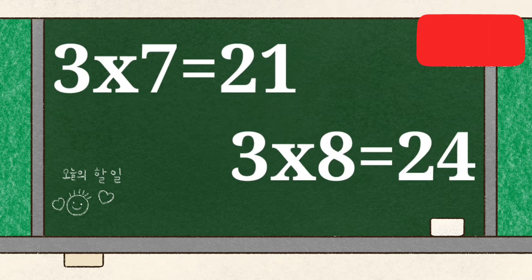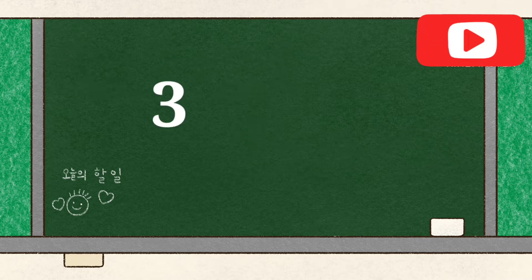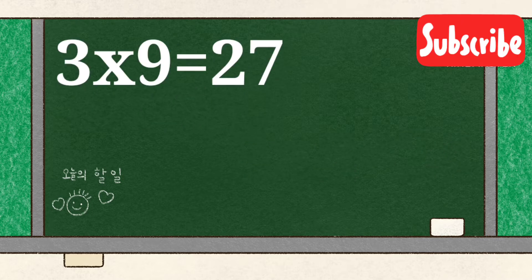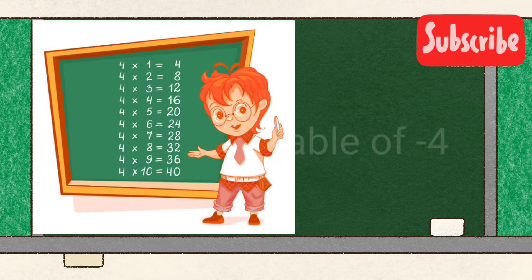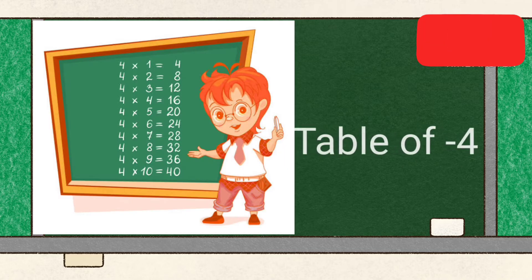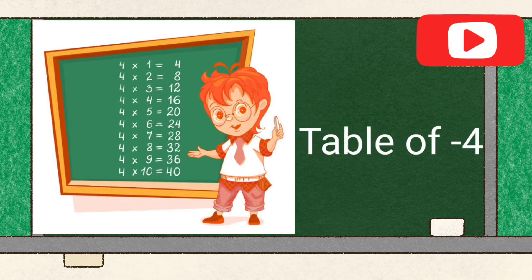3 8's are 24, 3 9's are 27, 3 10's are 30. Table of 4.